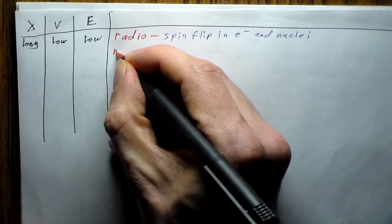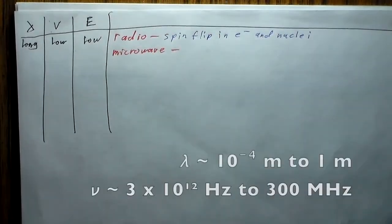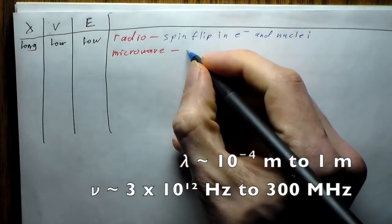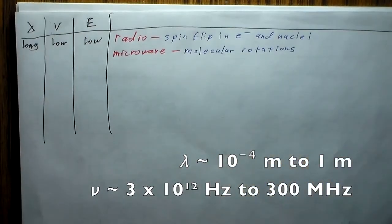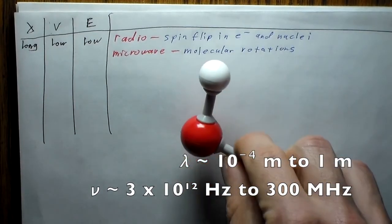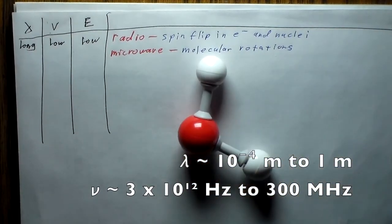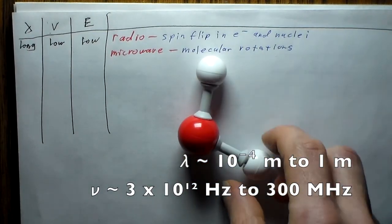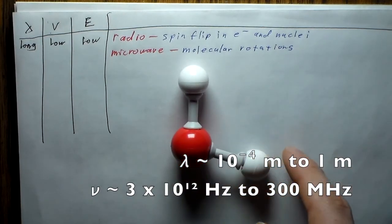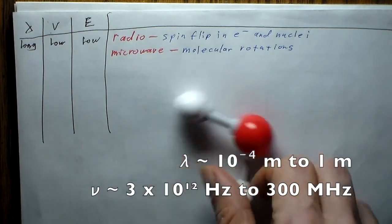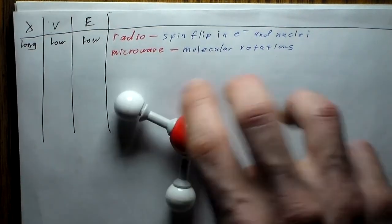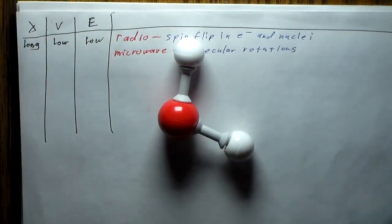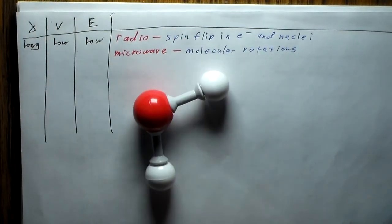Next up are microwaves, and these cause molecular rotations. What happens is our molecule — in this case a water molecule — when subjected to microwaves, starts spinning around. This rotation is the basic principle.